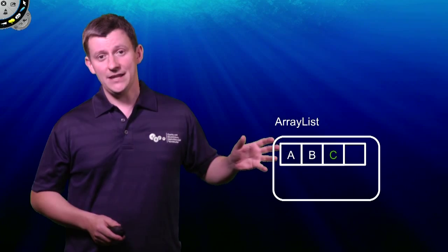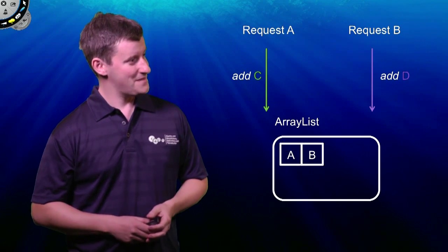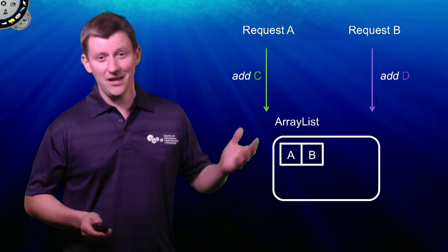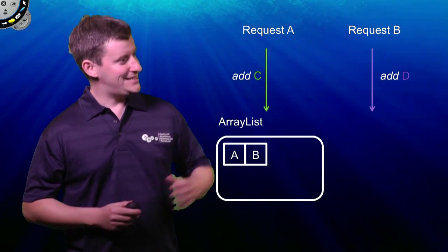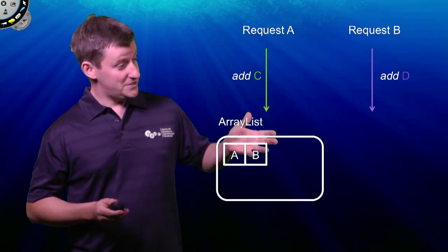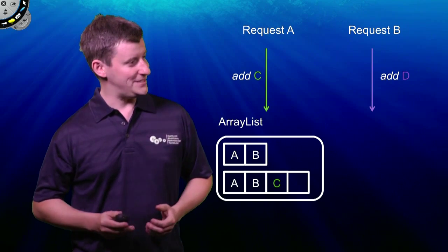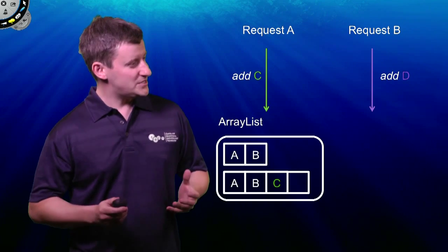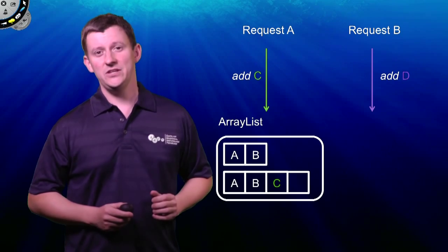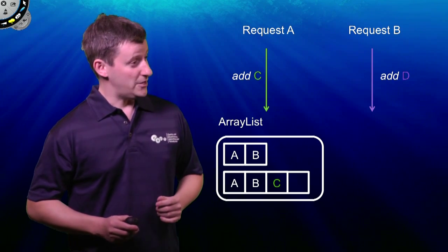So let's consider two threads concurrently trying to add data to one of these ArrayLists. First of all, request A calls add to add C to the array. The ArrayList in the add method spots that the array is full. So it allocates one twice as big, it copies all the data across, and it adds the new element, and it's just ready to set this as being the new array for the ArrayList when, at this most inopportune moment, request B has its go.